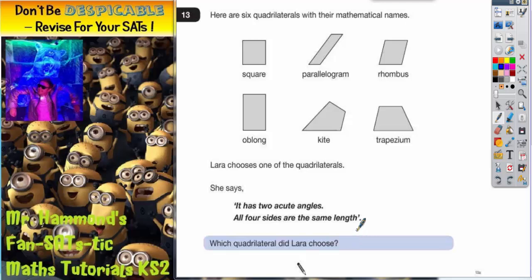As soon as you see that all four sides are the same length, you should straight away be focusing on the square and the rhombus. Remember a rhombus is just like a wonky square. All four sides are the same length, which we can say about both a rhombus and a square.